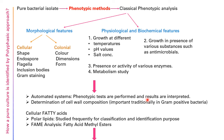After that, automated systems are used where phenotypic tests are performed and results are interpreted. Determination of cell wall composition is important — traditionally done for Gram-positive bacteria, also on automated systems. Cellular fatty acids are studied; polar lipids are studied frequently for classification and identification purposes.